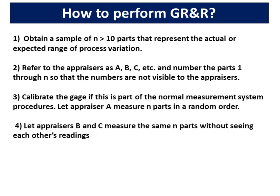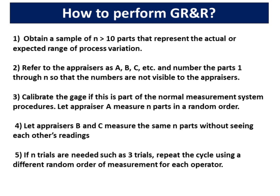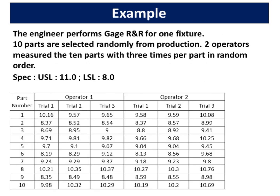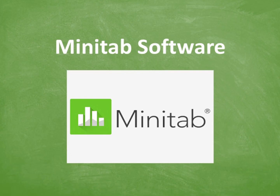Step 3: Calibrate the gauge if this is part of the normal measurement system procedures. Let appraiser A measure N parts in a random order, and let appraisers B and C measure the same N parts without seeing each other's readings. If multiple trials are needed, such as 3 trials, repeat the cycle using a different random order of measurement for each operator. For example, the engineer performs gauge R and R for one fixture: 10 parts are selected randomly from production, 2 operators measured the 10 parts 3 times per part in random order. The upper spec limit, USL, is 11 while the lower spec limit, LSL, is 8.